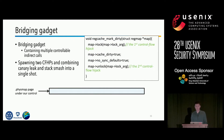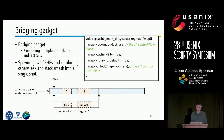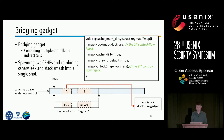To combine the operations of disclosing the stack canary and smashing the stack into a single shot, we need the assistance of bridging gadgets. Bridging gadgets are kernel functions containing multiple controllable indirect calls, spawning two opportunities to hijack control flow. For example, the kernel function rmap_walk_locked is a bridging gadget which performs two indirect calls. If we let the map point to a phase-map region under our control, we can use the first indirect call to execute auxiliary and disclosure gadgets to leak the stack canary, and the second indirect call to execute the stack smashing gadget.